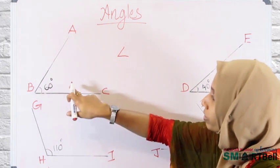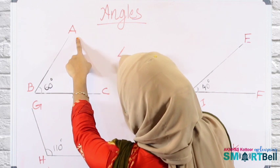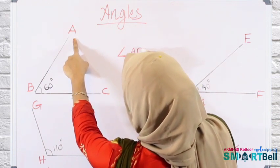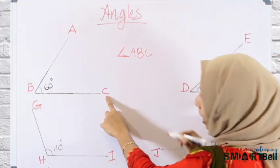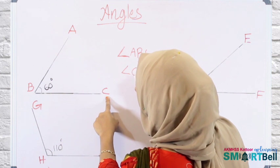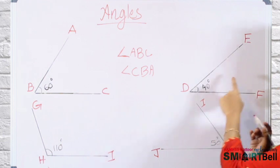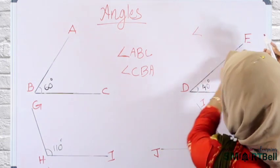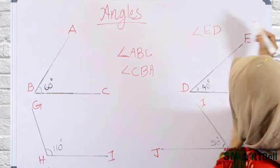We are going to name the first angle. Starting from here. Angle - this is the symbol of angle - angle ABC. Either we can call angle CBA. What is the name of this angle? Angle EDF. Either we can call angle FDE.